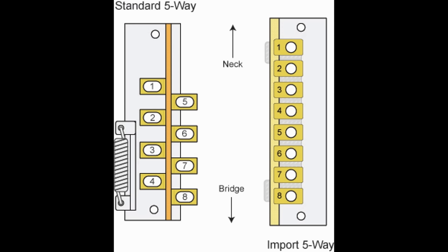So now, if you happen to have an import type switch in which all of the lugs are on one side or in a row, you can see here the correlation between the two types of switches and understand the relationship. One being the bridge, two being the middle, three being the neck, four being that common. You can see how that works. Everything's going to work exactly the same on this switch. You just have to understand the numbering.